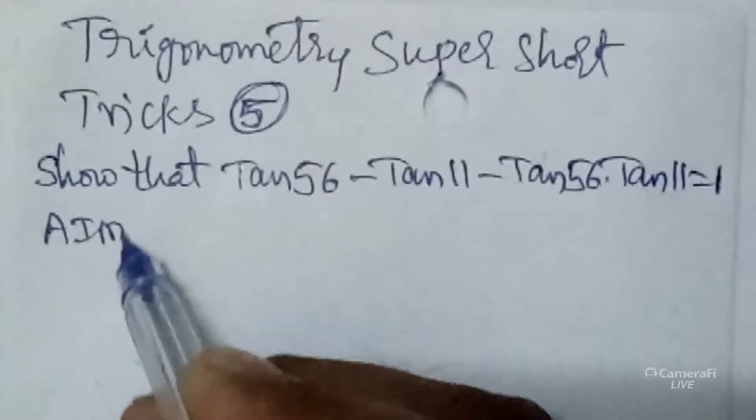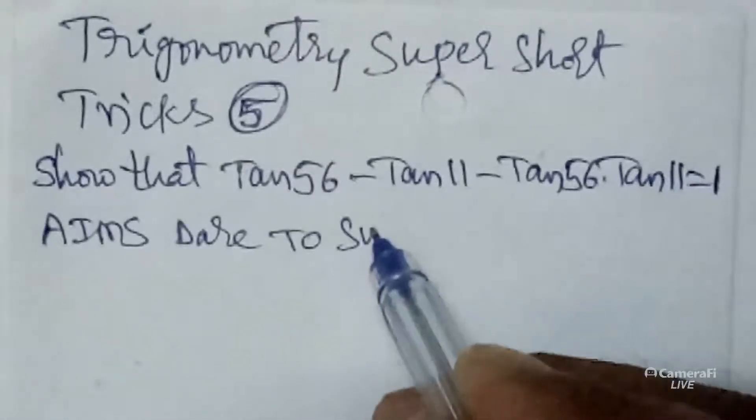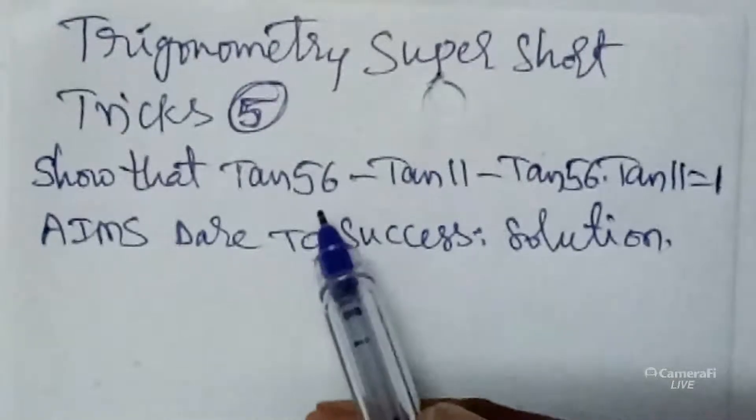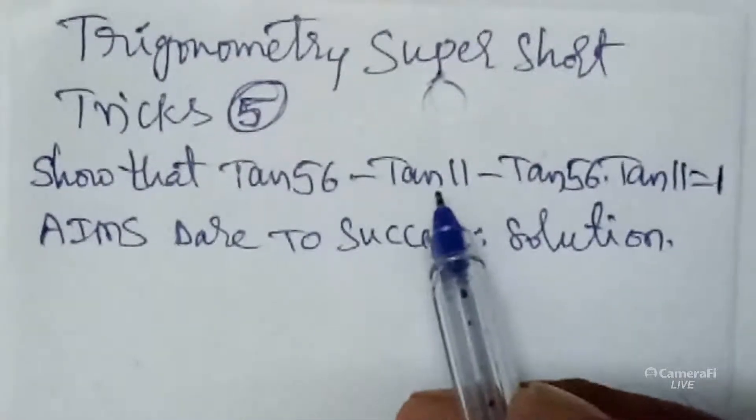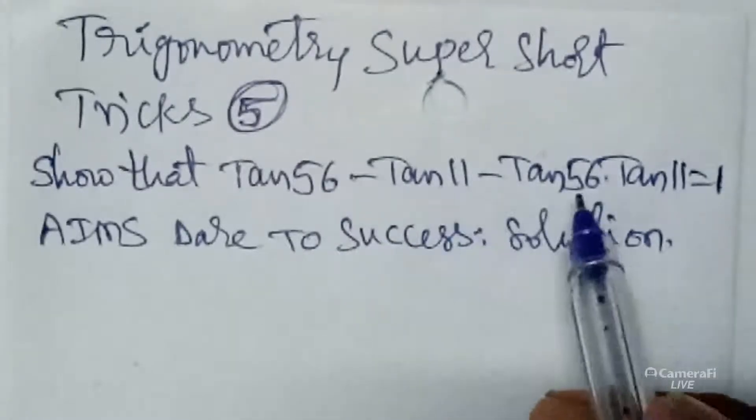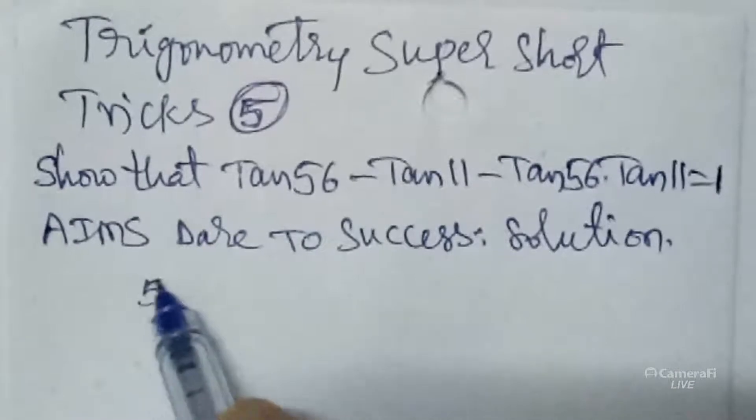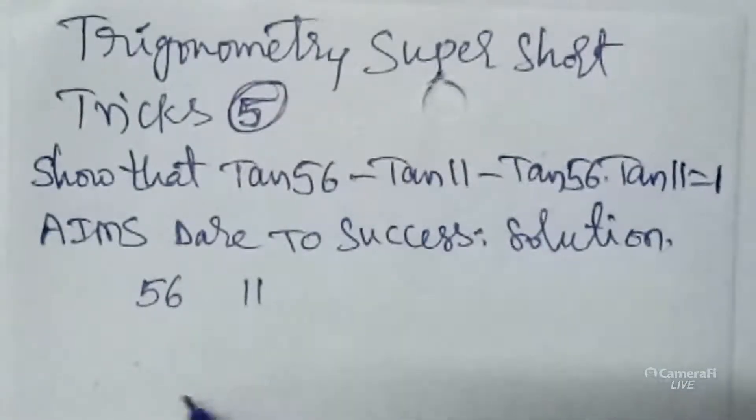AIMS Dare to Success solution: First of all, you can check left side repeating values. 56 and 11 is repeating two times, so you can write 56 and 11, 56 and 11. The middle symbol is minus, so write minus.